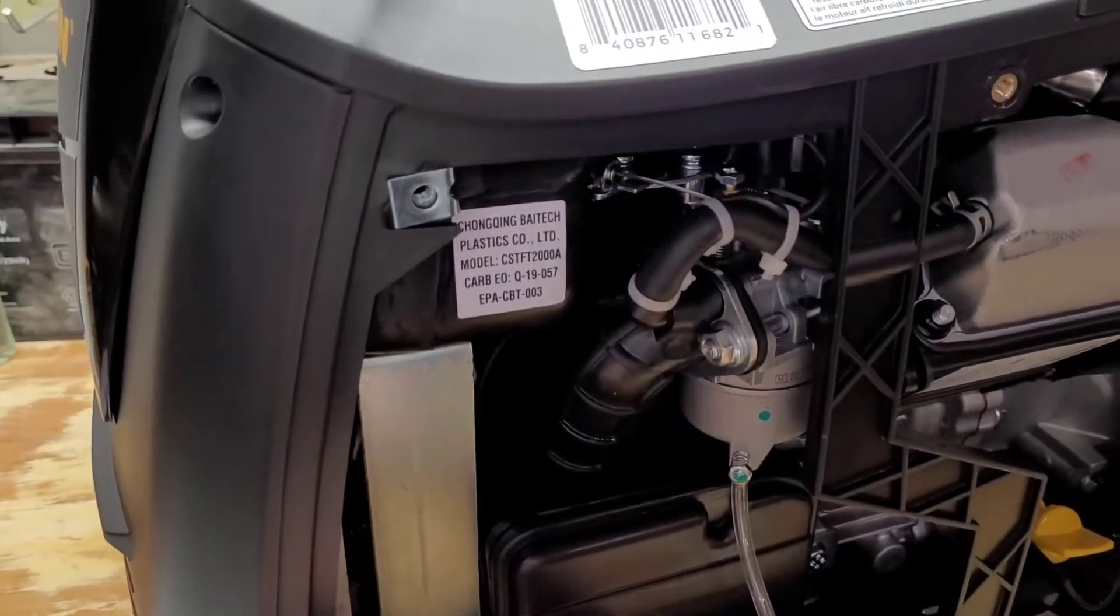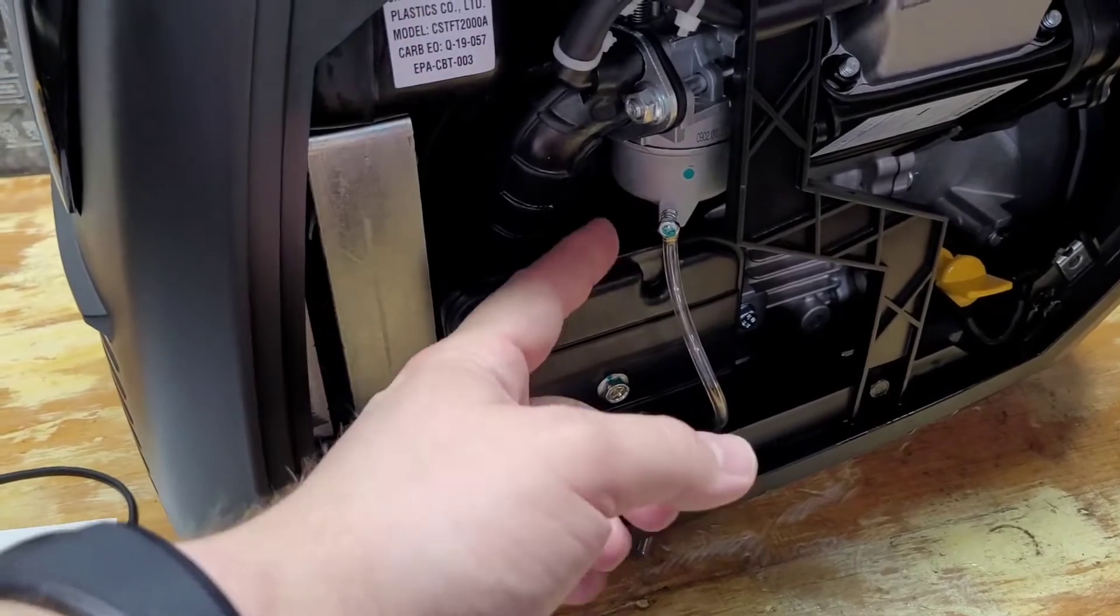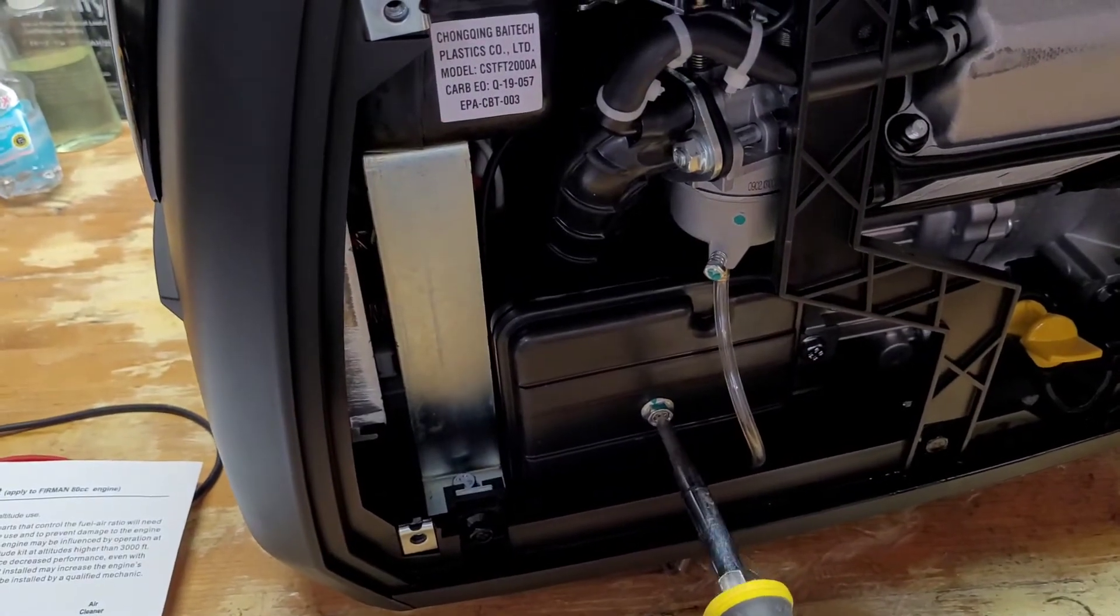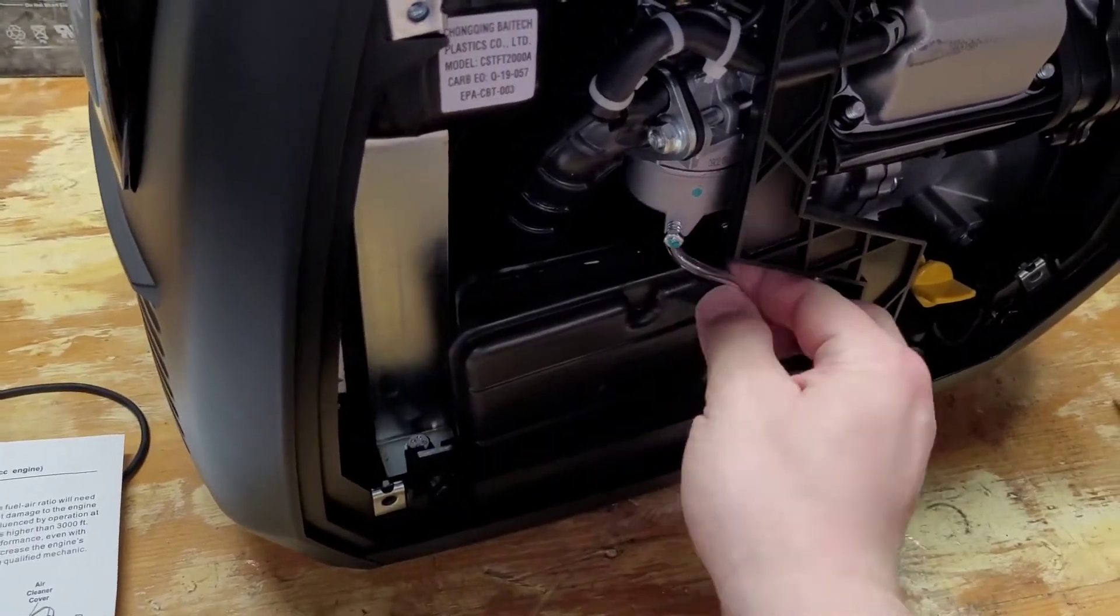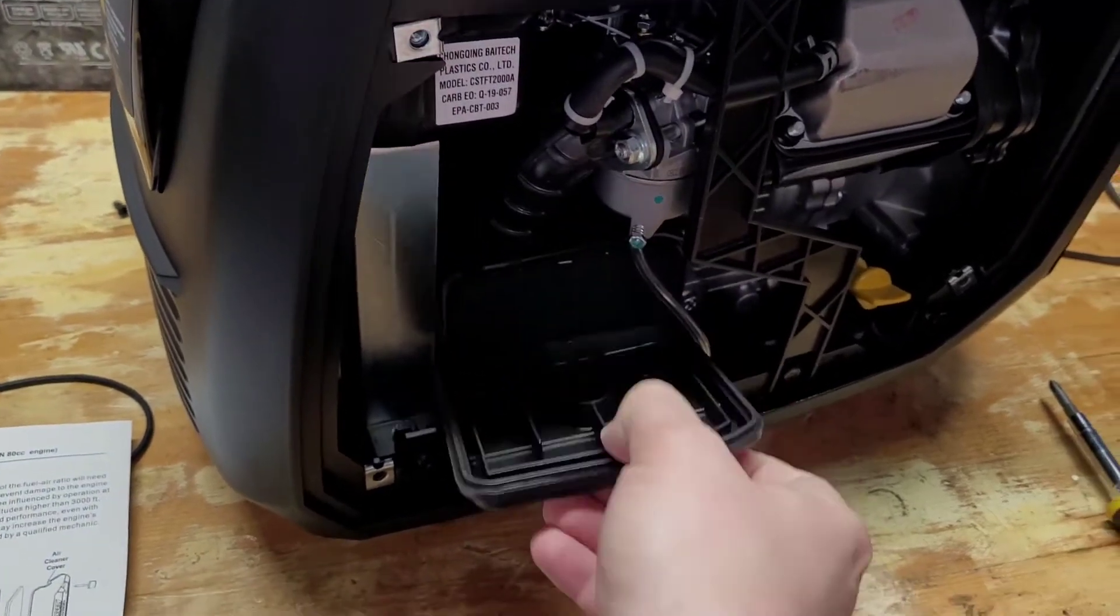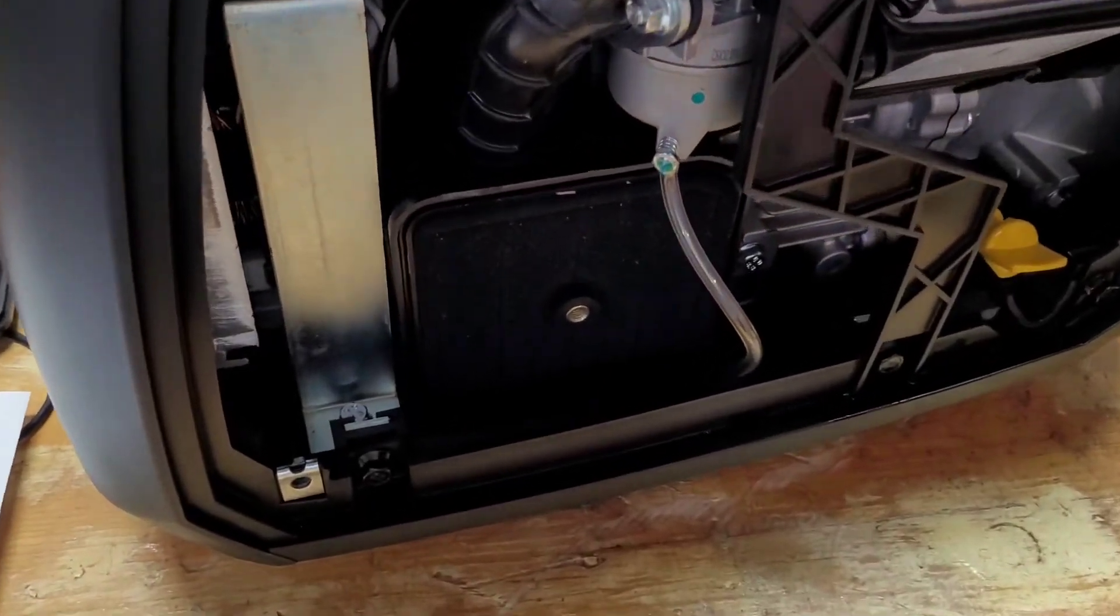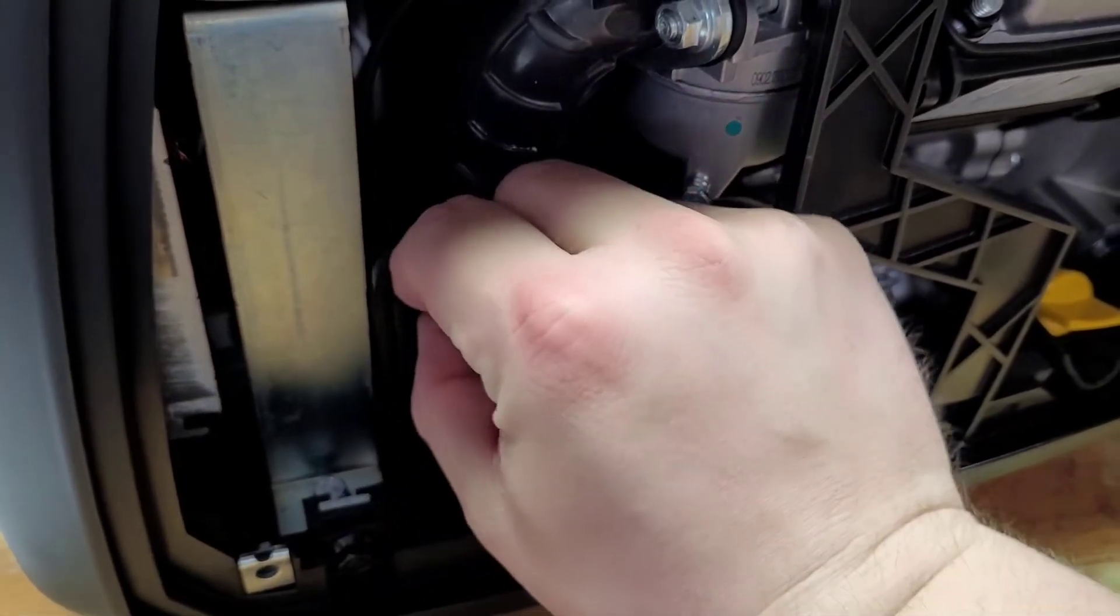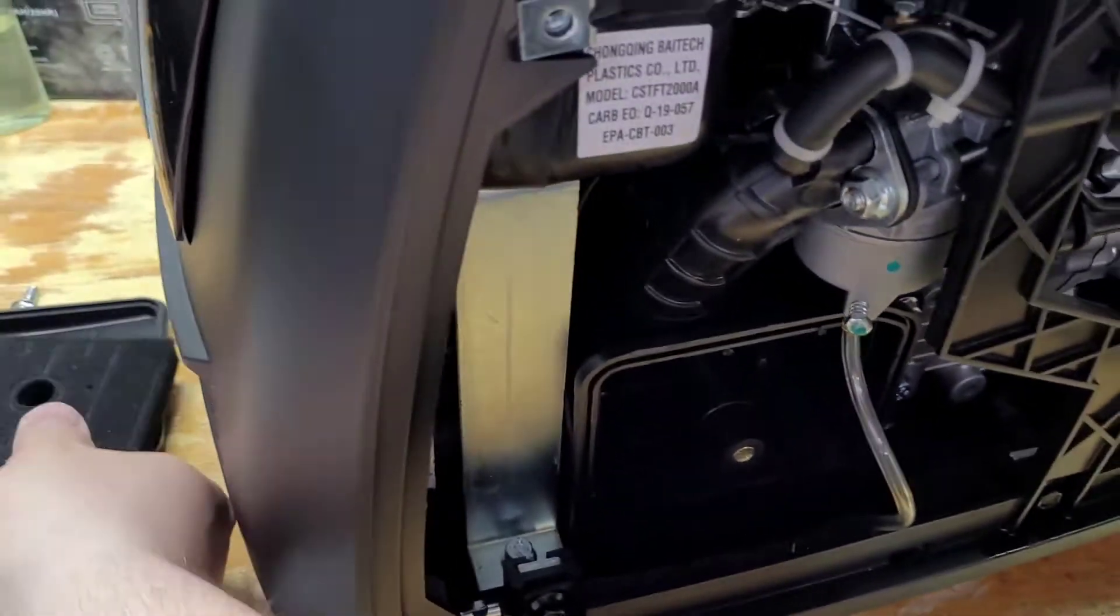Next we're going to remove the airbox here to give us better access to the carburetor. So I'm going to start by removing this screw right here. Once that screw's removed, the airbox cover should be able to pull right off and we'll set that aside. Then we will pull the actual air filter out as well and set that aside.